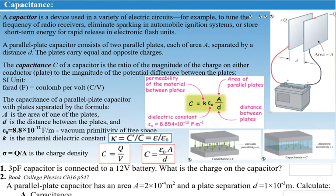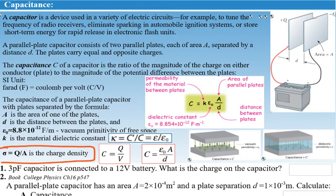Epsilon sub zero, the vacuum permittivity of free space, equals 8.85 × 10⁻¹² farads per meter. There is also charge density sigma — how much charge per area. The two formulas you actually need to know are: capacitance equals charge divided by voltage, and capacitance equals epsilon sub zero (or K times epsilon sub zero) times area divided by distance between the plates.